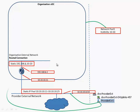The next step is to look at which port group is used by this vShield Edge device. Every vShield Edge device has two virtual network adapters, and this vShield Edge device is using this port group to connect to the provider external network.